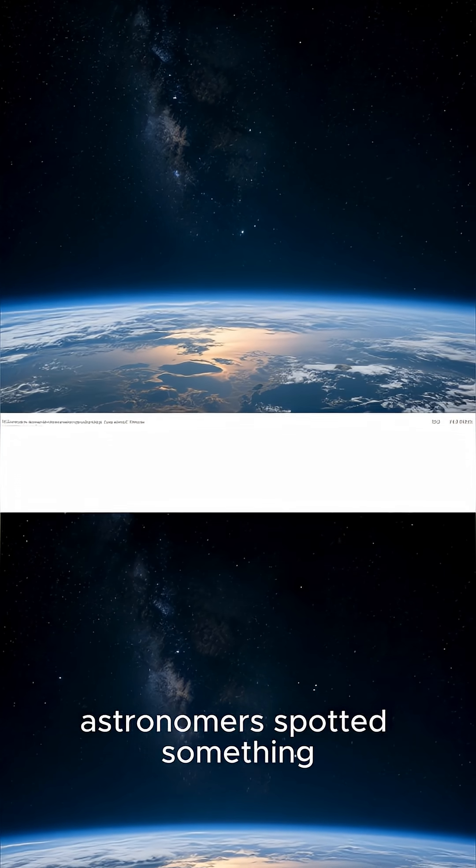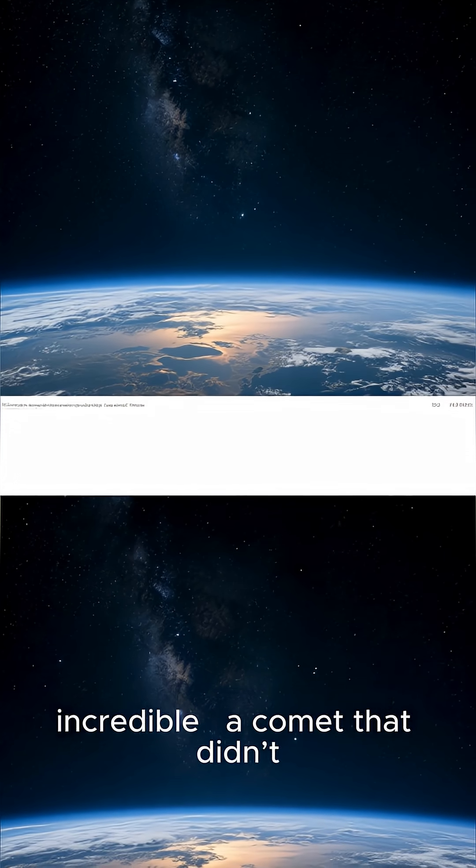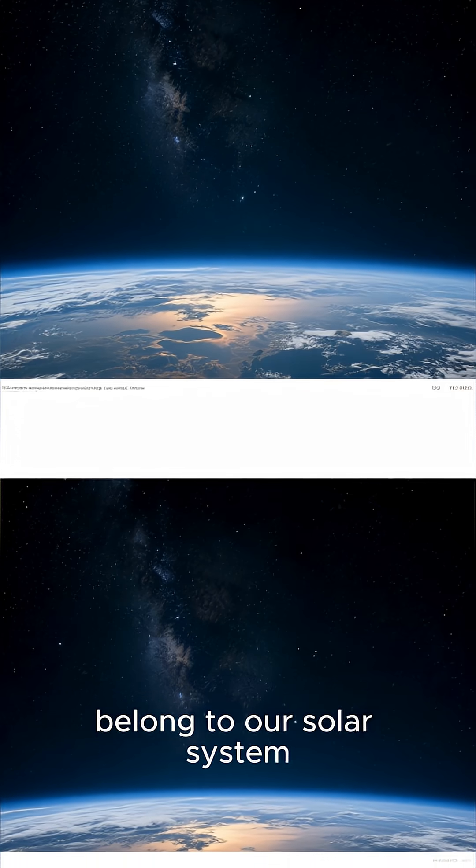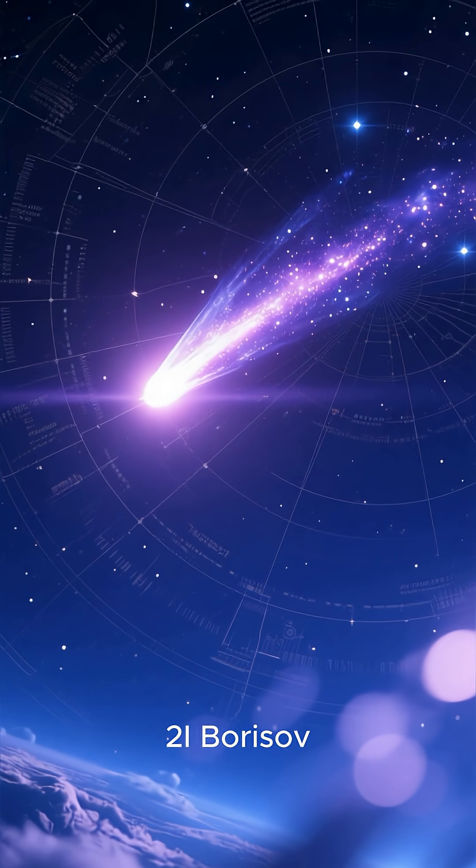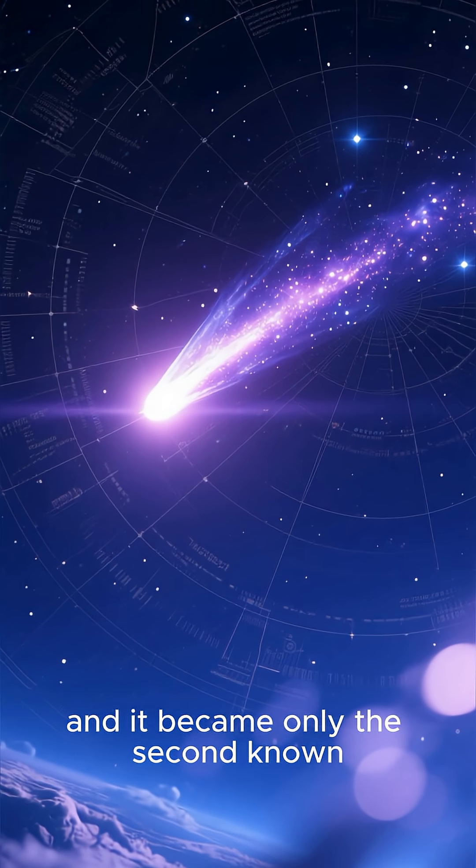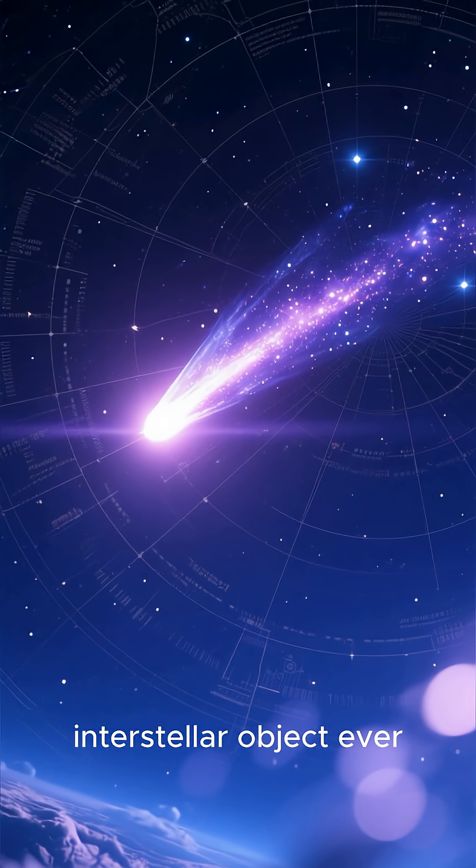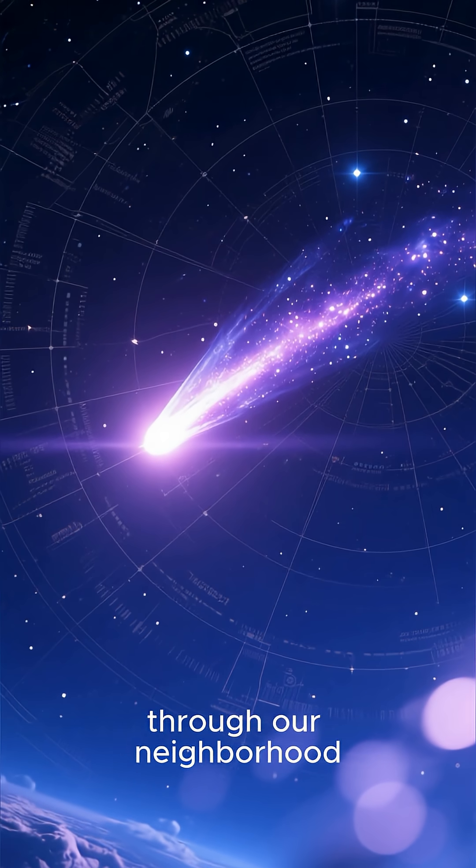In 2019, astronomers spotted something incredible, a comet that didn't belong to our solar system. This object was named 2I Borisov, and it became only the second known interstellar object ever discovered passing through our neighborhood.